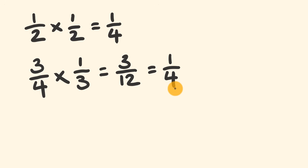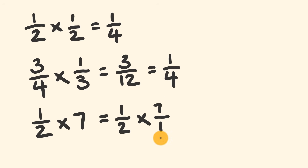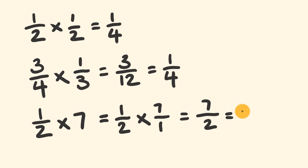What if we have a whole number? Say one half multiplied by seven. We keep the half and turn 7 into a fraction: 7 over 1. Then multiply: 1 times 7 equals 7, and 2 times 1 equals 2, giving us 7 over 2. Simplify: 7 divided by 2 equals 3 with 1 left over — that's 3 and a half. Of course, half of seven is three and a half.